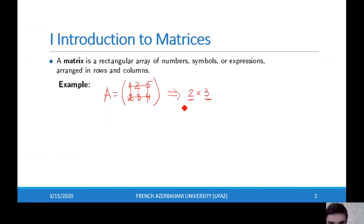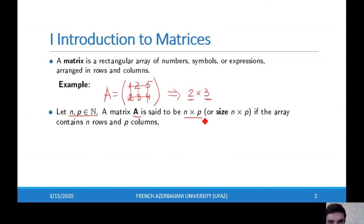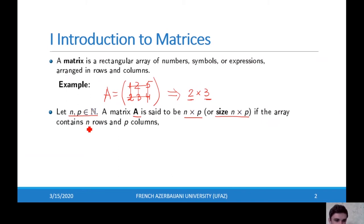Generalizing this idea, we define the size of a matrix. Let n and p be natural numbers. Then the matrix A is called an n times p matrix, or n times p size matrix, if the array contains n rows and p columns.